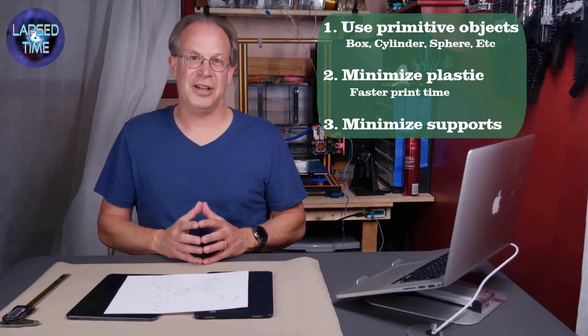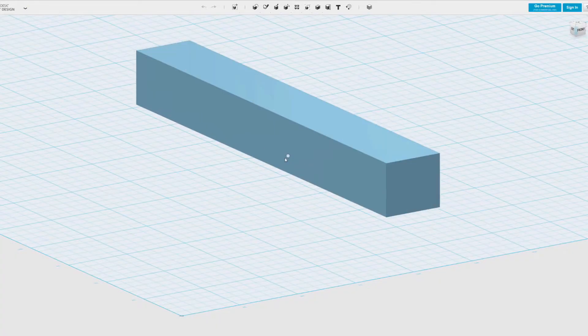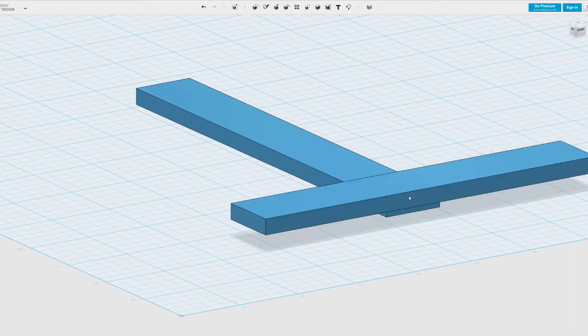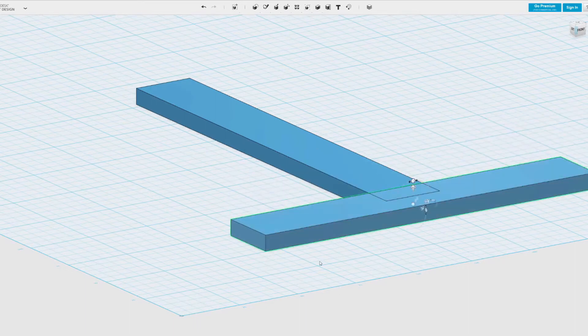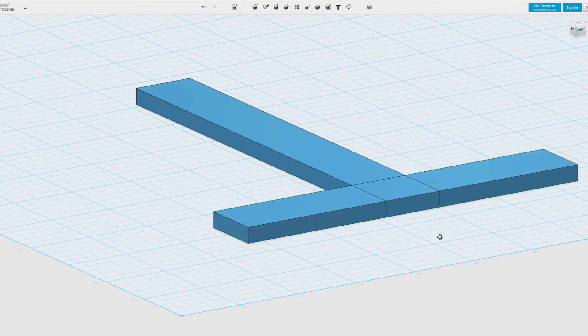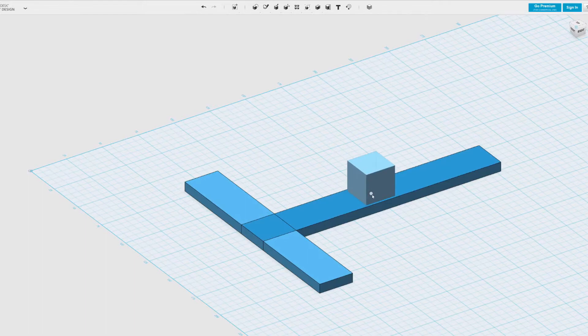I'm using Autodesk 123D which is no longer supported. I still have the executable files so I can keep using it because this is a program I'm very familiar with. But at some point I will end up moving to something else. As you see in this screen recording I only use the box primitive so I always tend to focus on functionality over creativity.